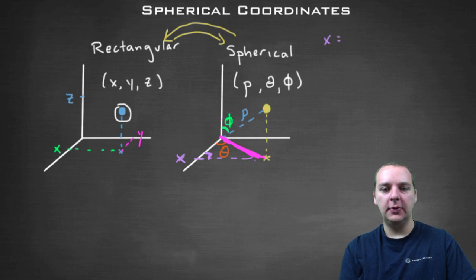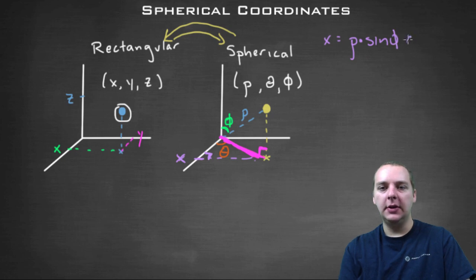Get rid of some of this stuff. Okay so what was that again, rho sine phi I think it was. So the x coordinate would be rho times sine of phi times the cosine of theta.